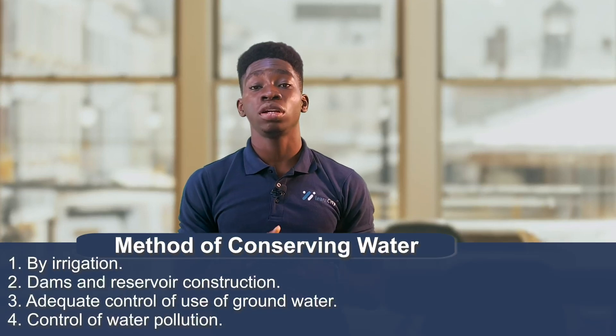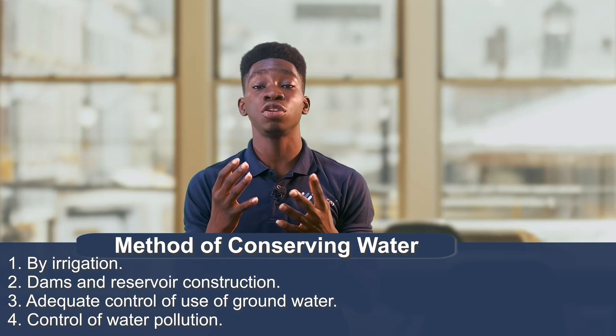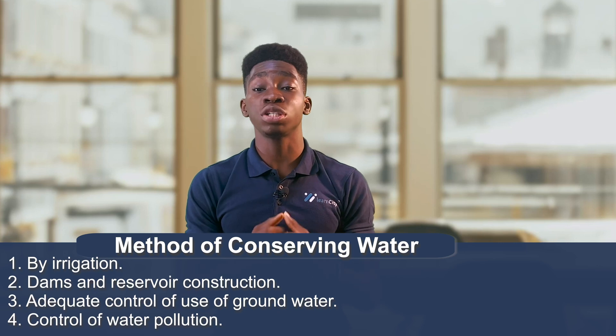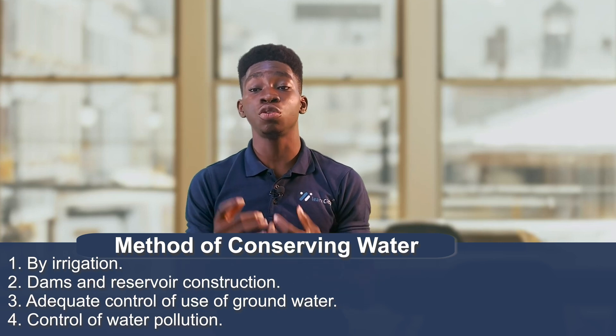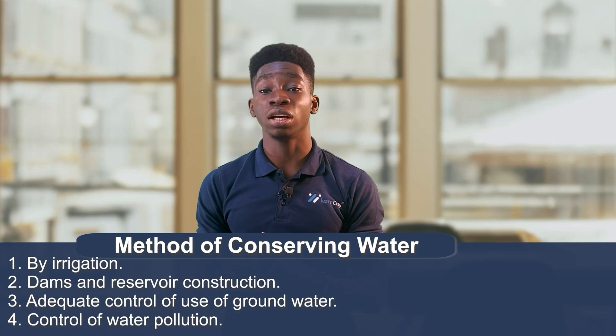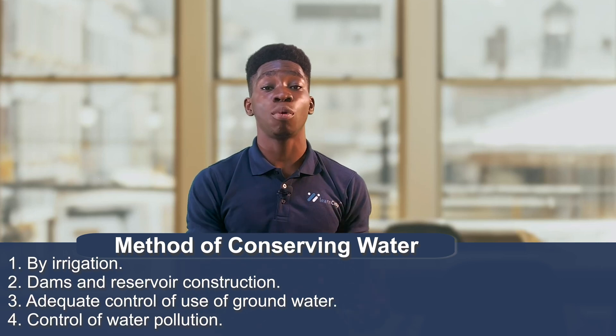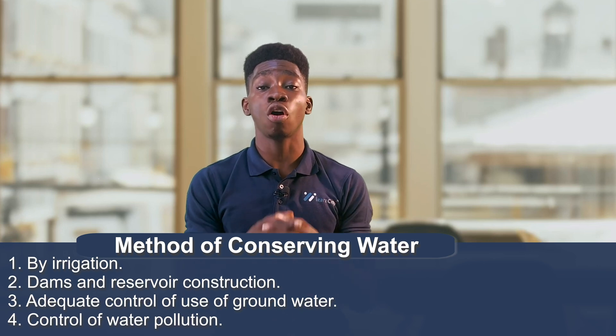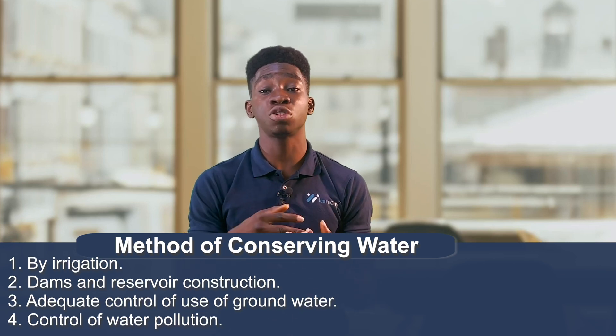Now let's discuss the methods of conserving water. Water can be conserved by irrigation and by building dams and reservoirs. We can also conserve water by adequate control of the use of groundwater — the way people dig wells should be regulated and controlled. Another method is the control of water pollution, which also helps to conserve water.